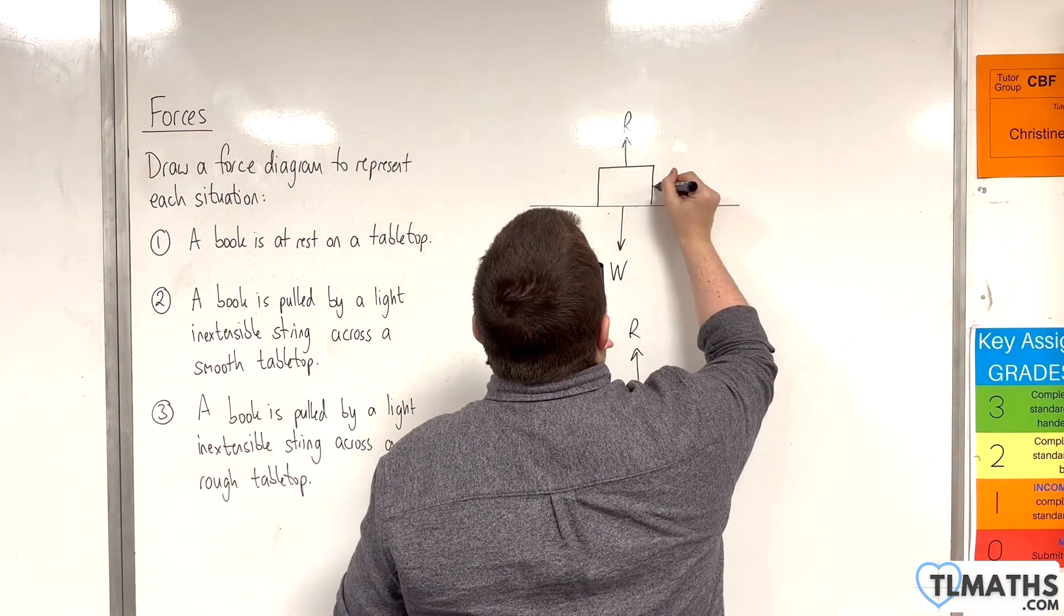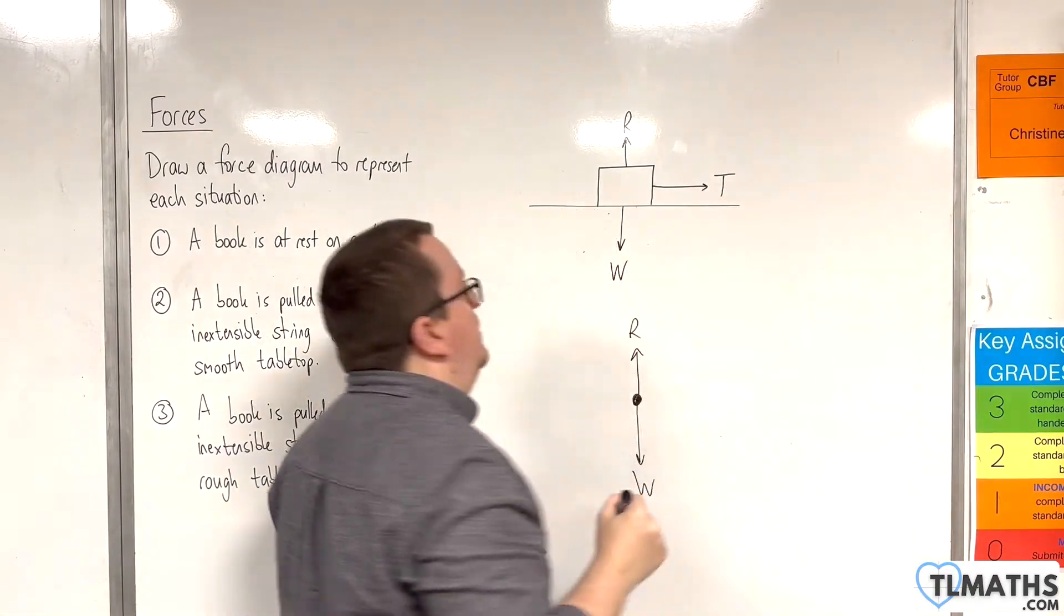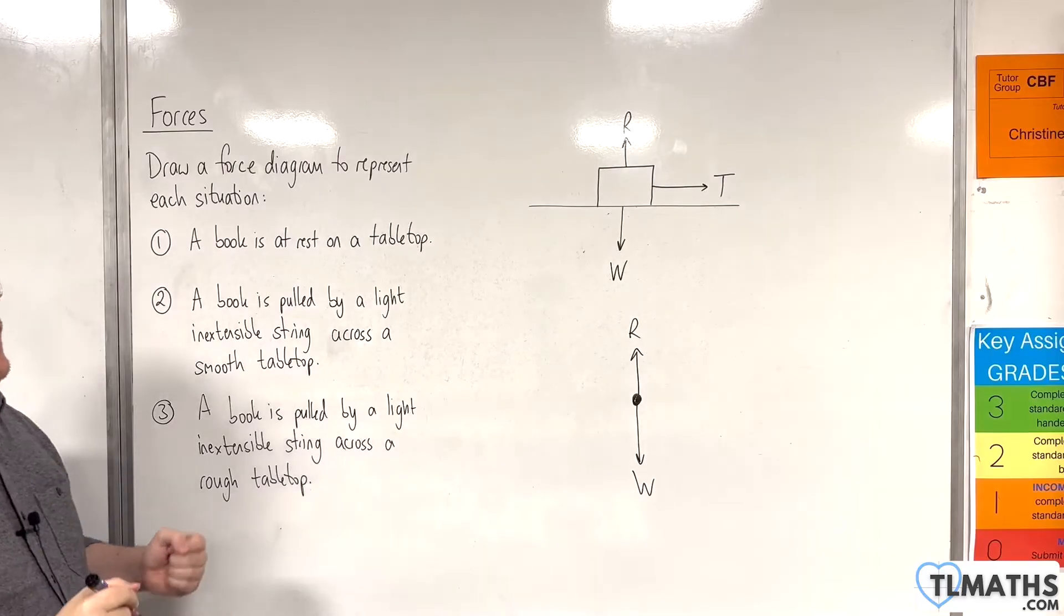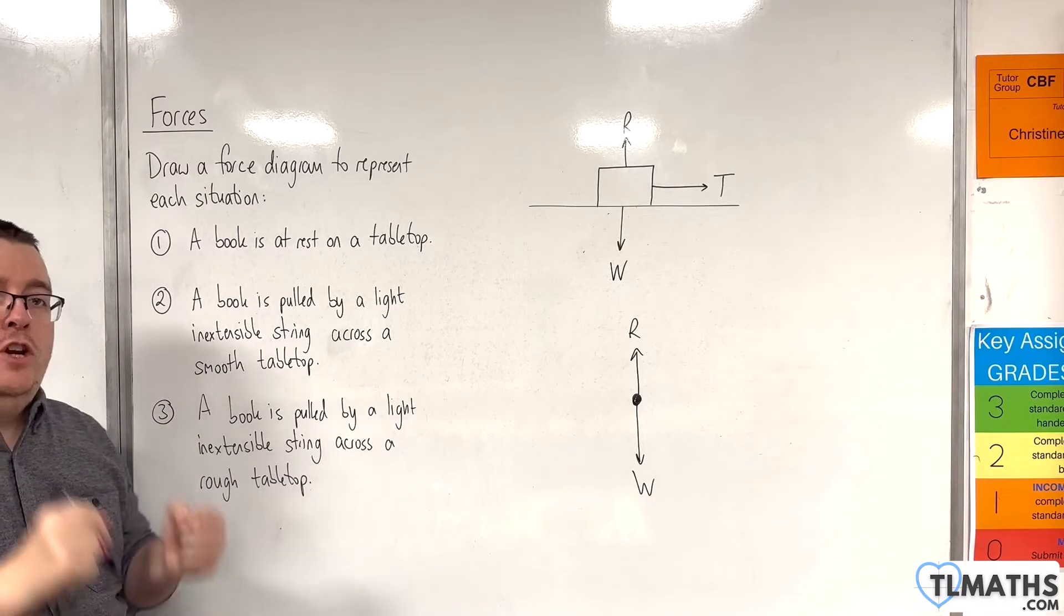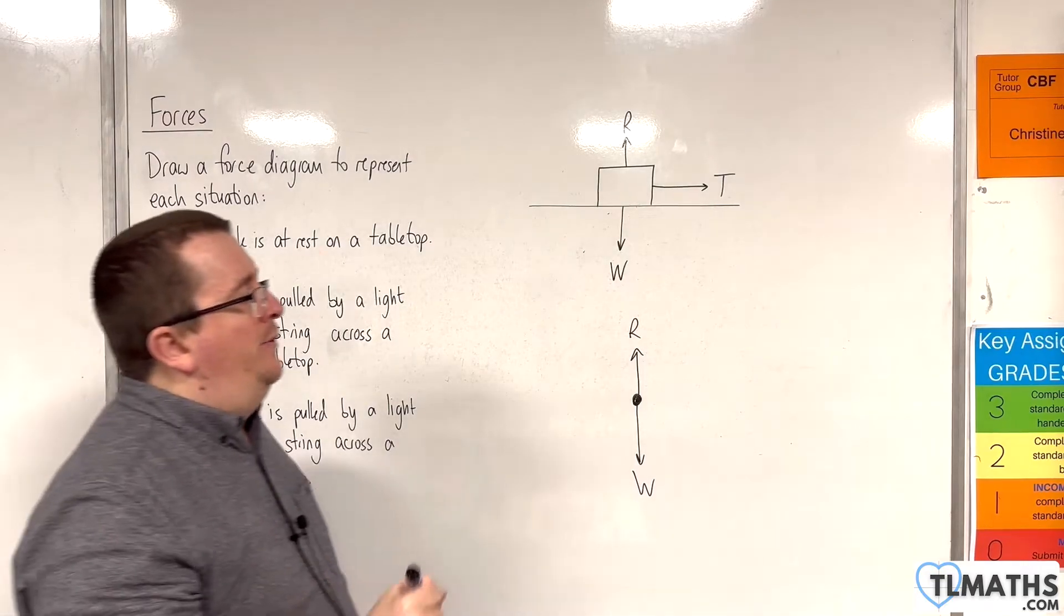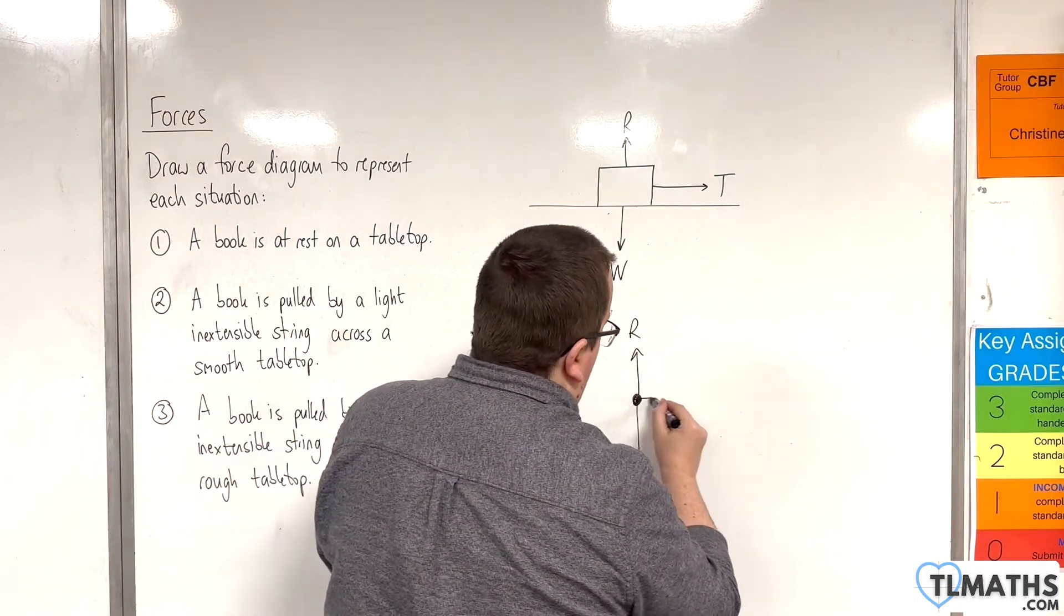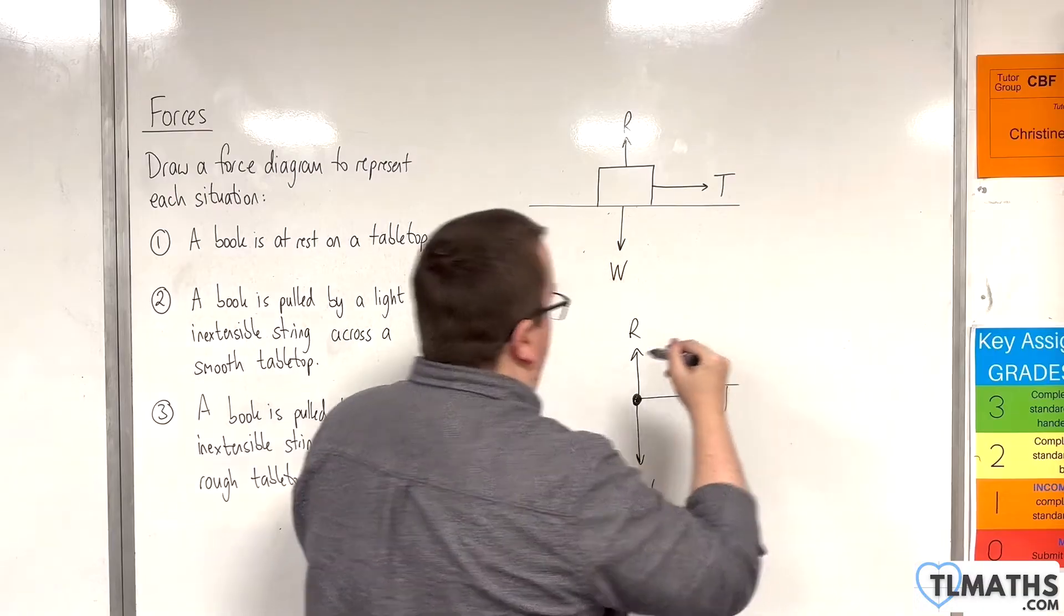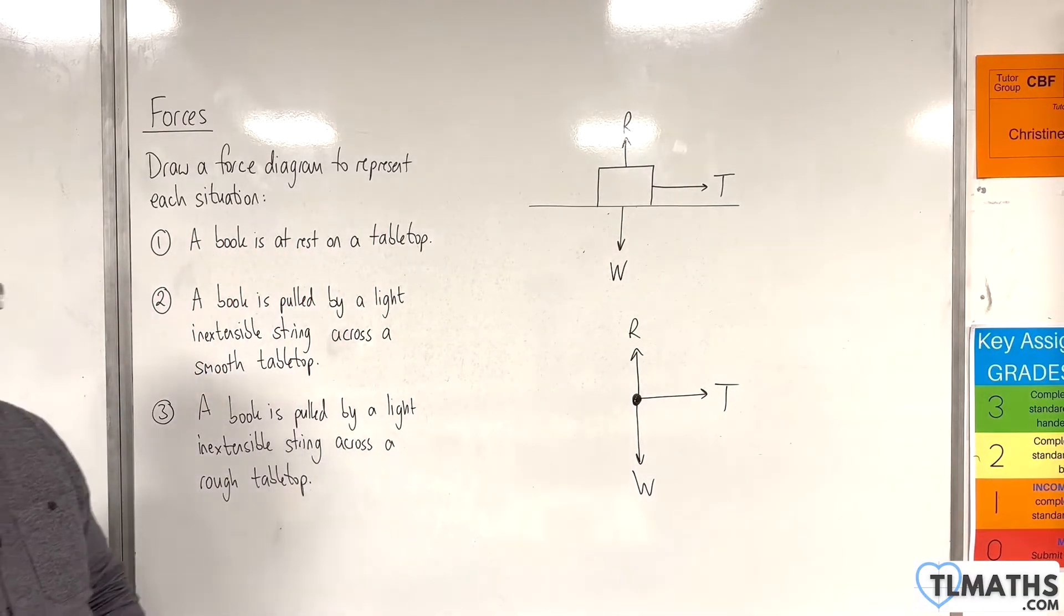And when it's being pulled, there will be tension in the string. And so we're going to label that as capital T. So on my minimalist diagram here, now we've got the tension added.